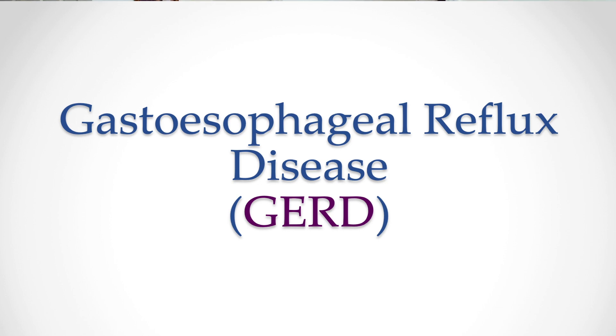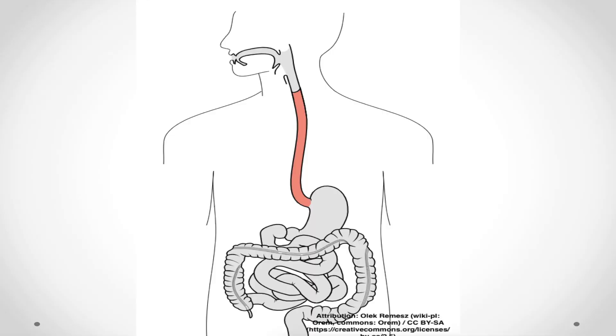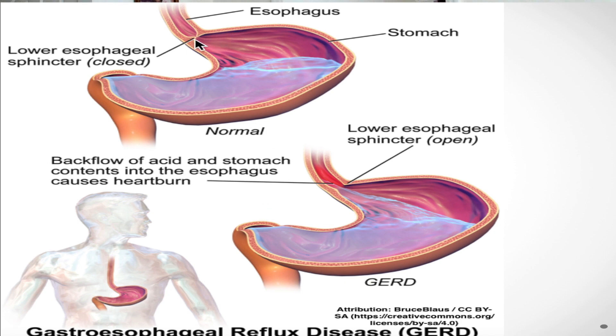In order to understand GERD properly, we really need to understand the gastrointestinal tract first. The gastrointestinal tract runs from the mouth all the way to the anus. The esophagus is connected to the stomach, and the stomach in turn is connected to the small intestine and then the large intestine. The junction between the stomach and the esophagus is the lower esophageal sphincter, which is closed most of the time because it is a lower esophageal high pressure zone.